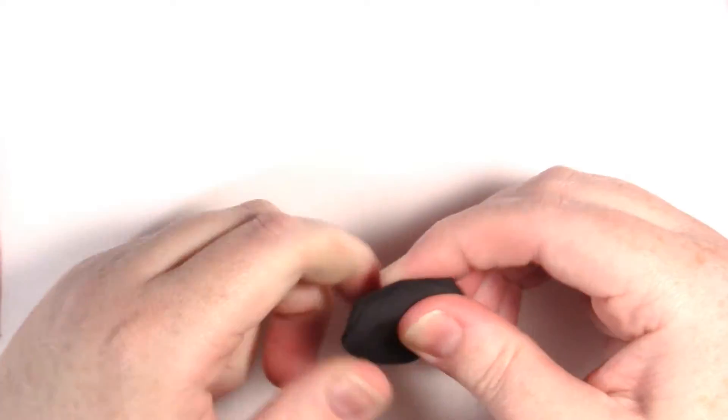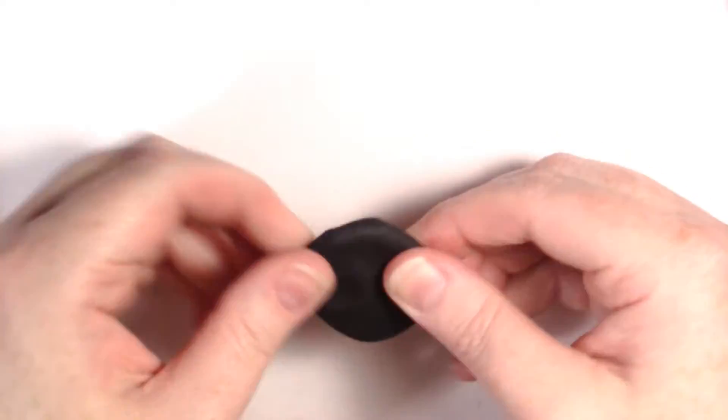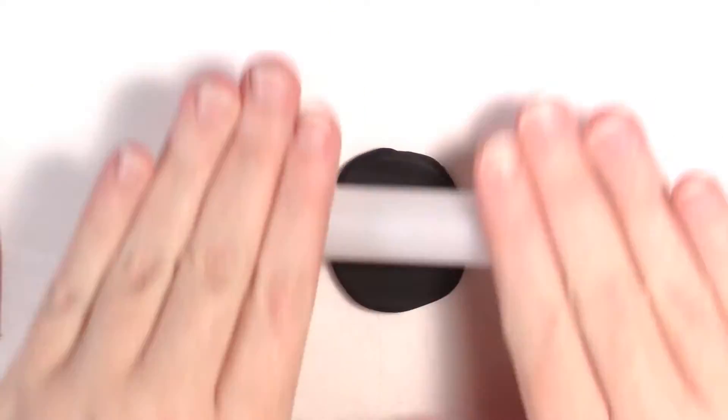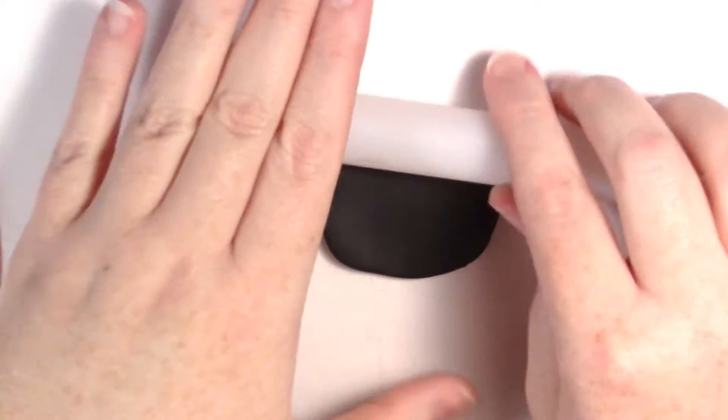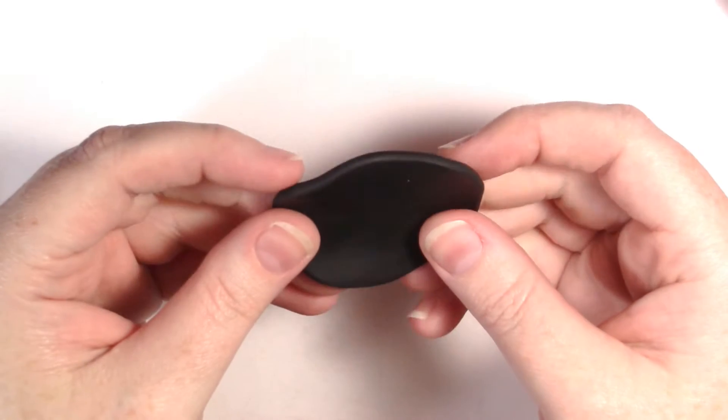Condition your black clay and roll it out to your desired thickness. You'll want to remember this will be going on your head so you don't want it too thick but you also don't want it too thin because of the details we'll be adding later.